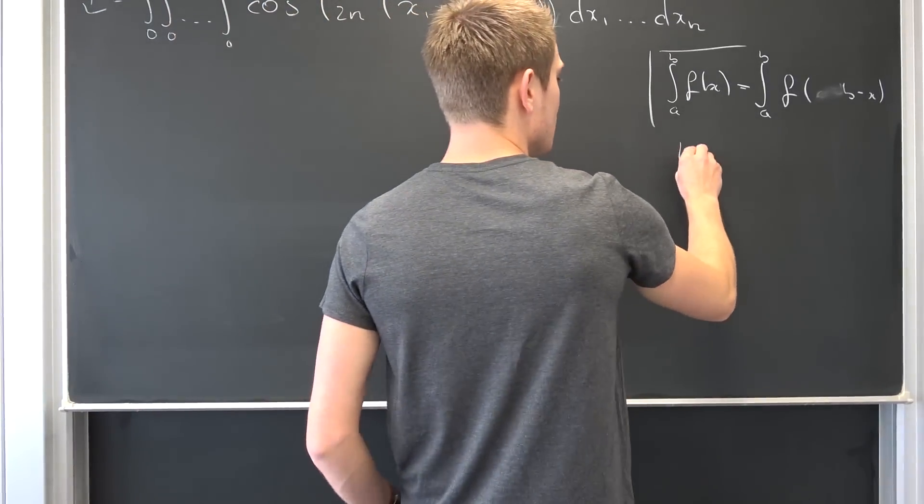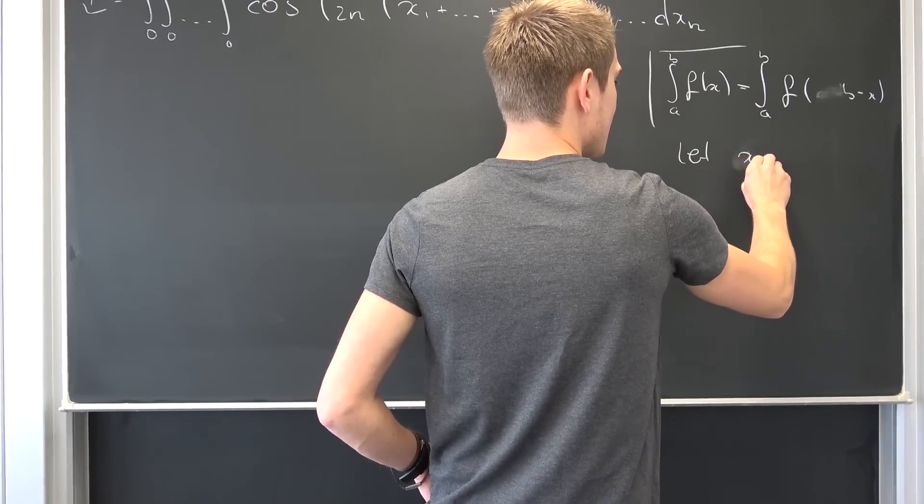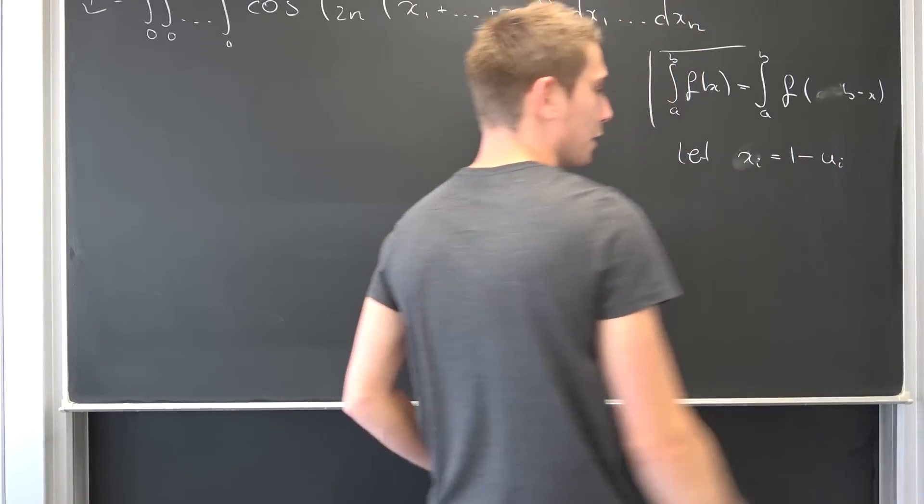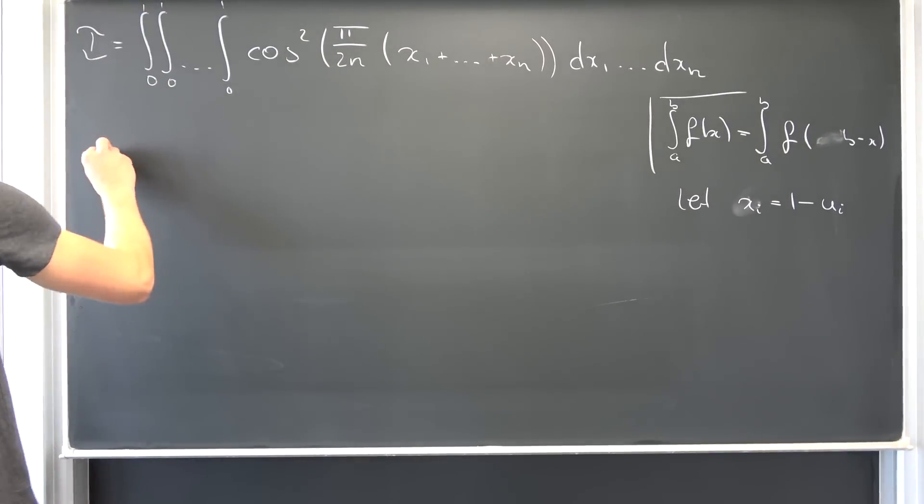Meaning what we are going to do is say let each and every xi, in this case, be equal to 1 minus some ui, for example, and we are going to plug this bitch in.